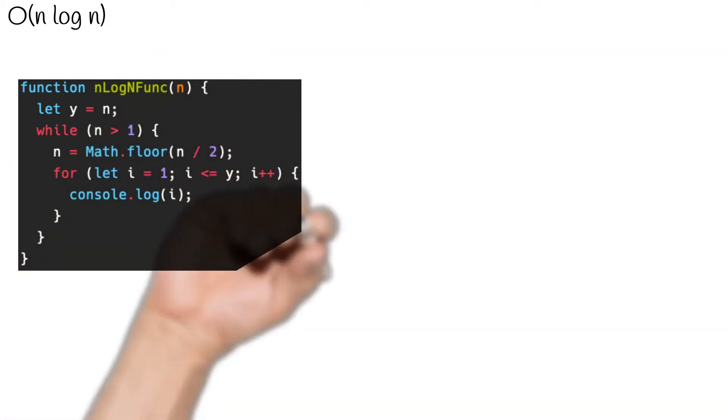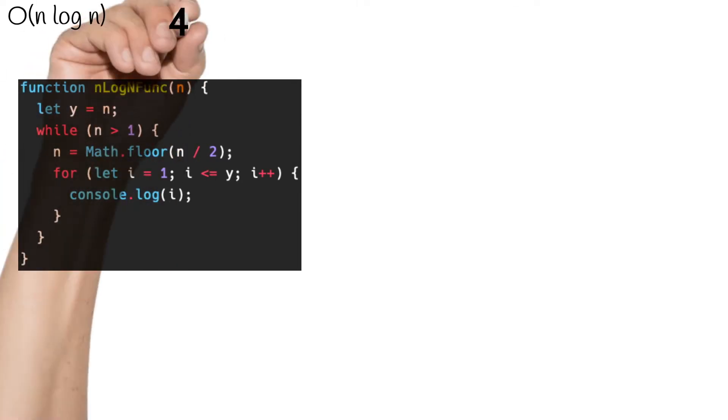To understand O of n log n, we will take this small function into consideration. This function has a complexity of O of n log n. Let's step through this code line by line so that we may understand what is happening here. This function takes one argument n, which for the sake of this example will be four.